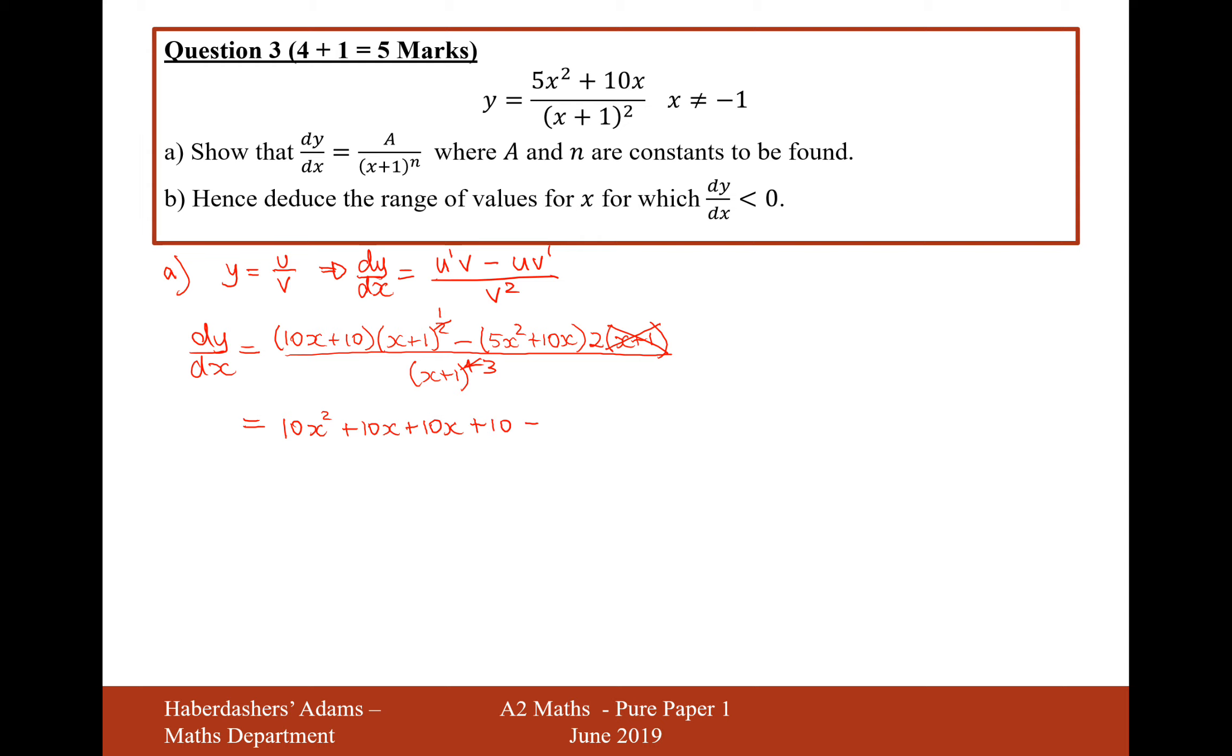Then it'll be minus 5x squared times 2, that'll be 10x squared. And then it'll be minus 2 times 10x, that'll be 20x. And if I close the brackets there and divide by x plus 1 cubed.